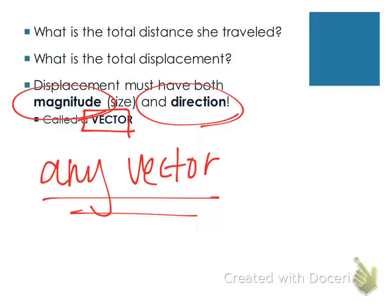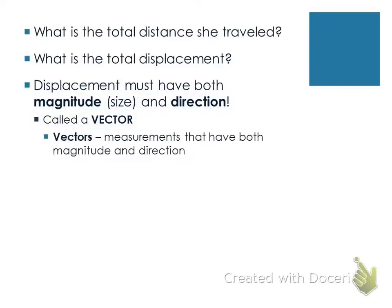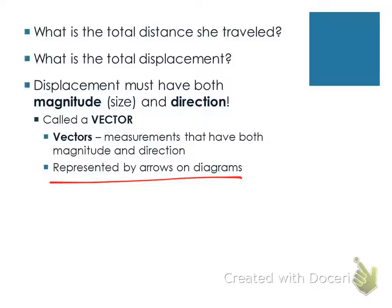Distance is not a vector — distance doesn't need direction. A vector is a measurement that has to have both magnitude and direction. Anytime we represent a vector, we do it with an arrow, because the arrow gives us a good indication of direction. Vectors can be both positive and negative depending on which direction the object is going.